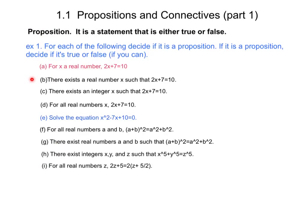Okay let's look now at B. B is a proposition. In fact it's a true proposition because there does exist a real number x such that 2x plus 7 is 10, namely x equals 3 halves.